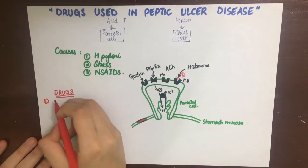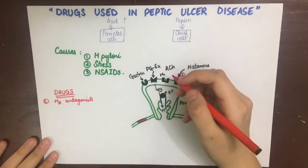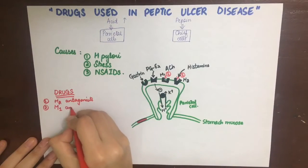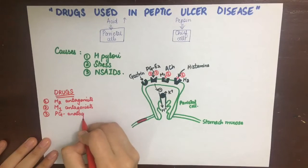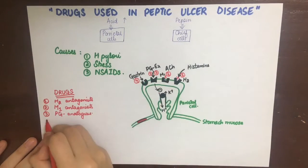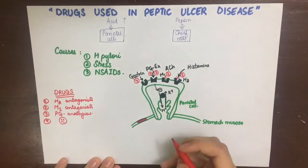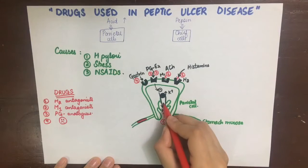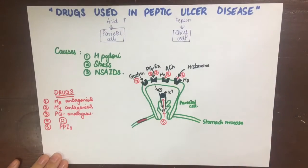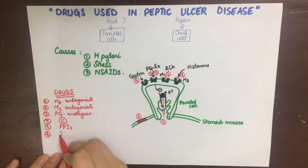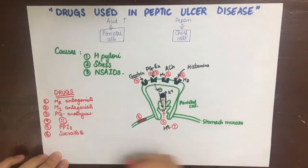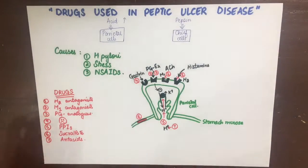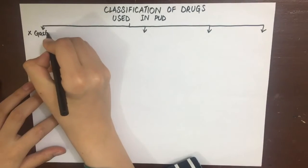The drugs and their sites of action on this diagram: firstly, H2 antagonists act on site one; secondly, M1 antagonists act on site two; thirdly, prostaglandin analogues act on site three. Sadly, we do not have any gastrin antagonists. Next, proton pump inhibitors inhibit the proton pump at site five. Sucralfate acts on site six to cover the ulcer and promote healing. Lastly, antacids neutralize the acid in the lumen.